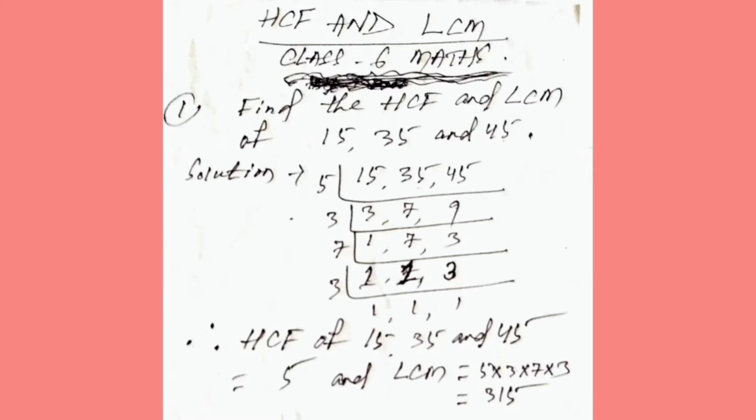So HCF of 15, 35 and 45 equals 5. And LCM of 15, 35 and 45 equals 5 multiplied by 3 multiplied by 7 multiplied by 3, which equals 315.